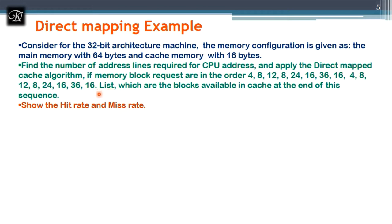After applying direct mapping, we need to list which blocks are in cache at the end of the sequence and calculate hit rate and miss rate — how many times the requested block was in cache (hit) versus how many times it had to be fetched from main memory (miss).